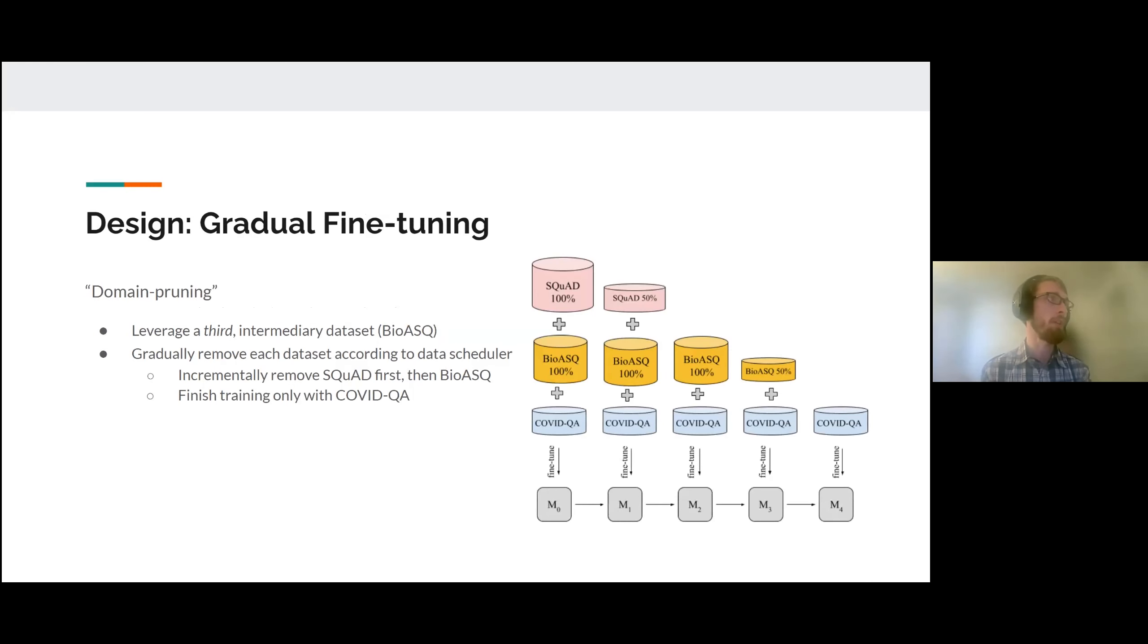As also part of our design, we experimented with gradual fine tuning. One of the methods that improved results exceptionally, which we'll discuss later, was what we call domain pruning. Essentially, gradual fine tuning originally only has two data sets, the in-domain and the out-of-domain, or the mixed domain. Here we leverage the third intermediary data set, Bioask, and then gradually remove components of SQUAD until SQUAD is fully removed. Then we remove elements of Bioask until it's completely removed and then complete the training on specifically COVIDQA.